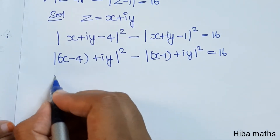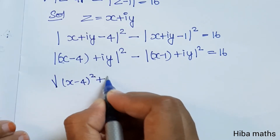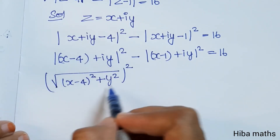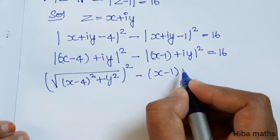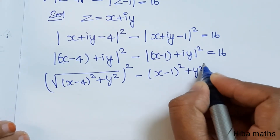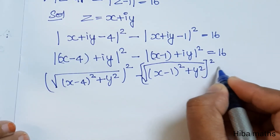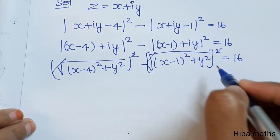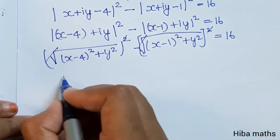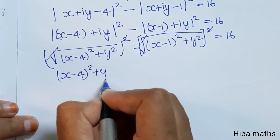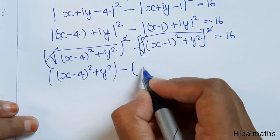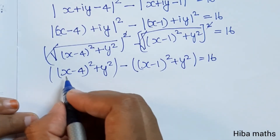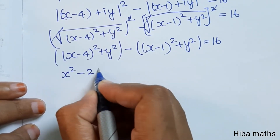Computing the modulus squared: (x - 4)² + y² minus (x - 1)² + y² equals 16. The square root and whole square cancel each other, leaving (x - 4)² + y² - [(x - 1)² + y²] = 16.